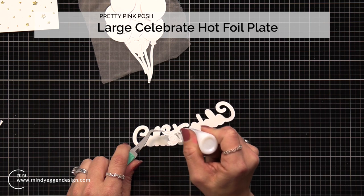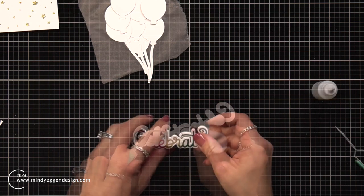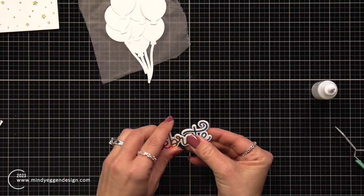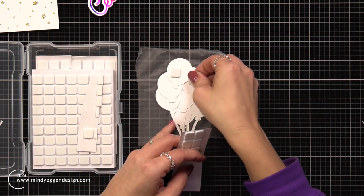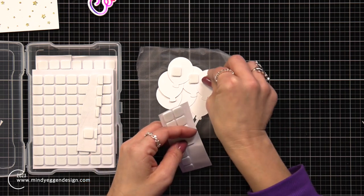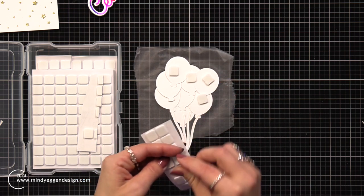This is the large Celebrate hot foil plate. I did this out of some rainbow glimmer foil and I had created this prior when the release came out. So I already had that done and I layered that together with multiple die cuts of the Celebrate shadowed piece.